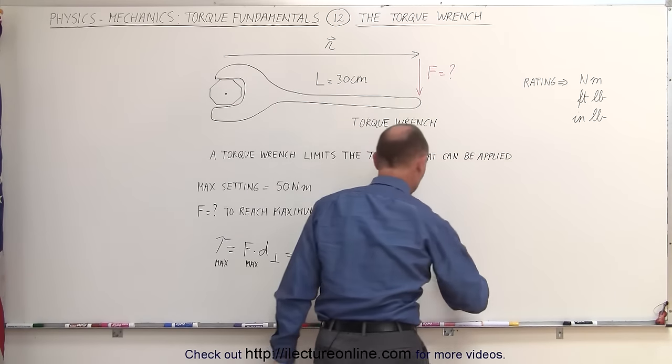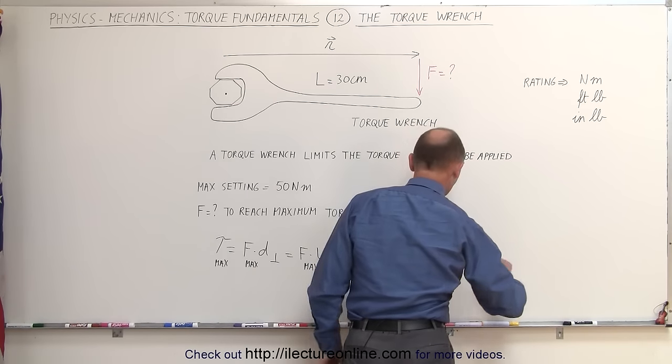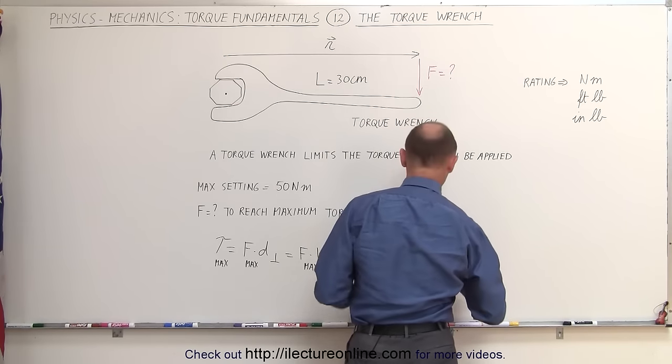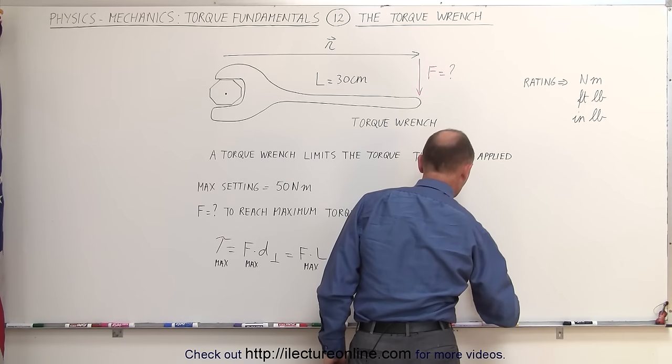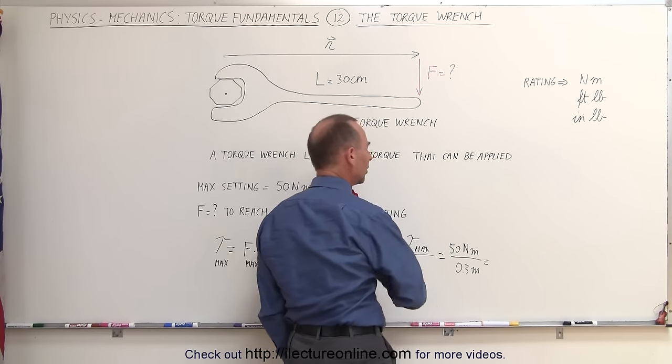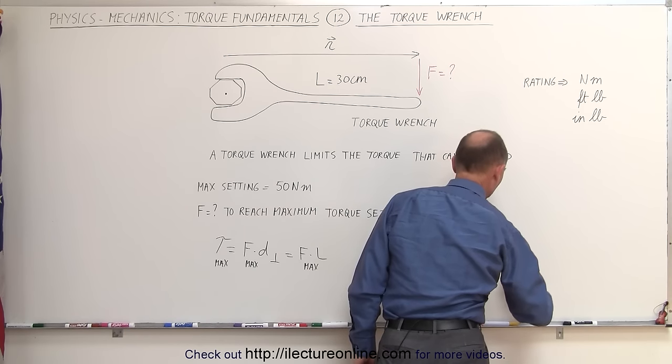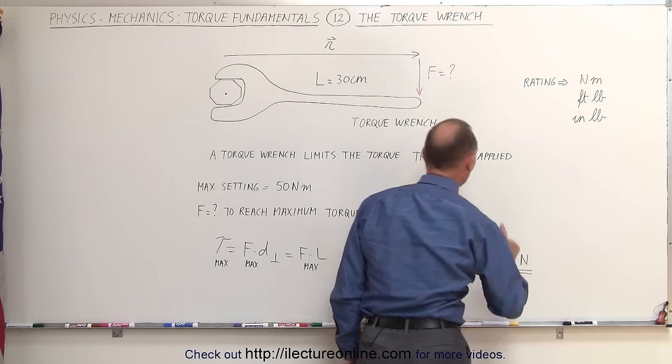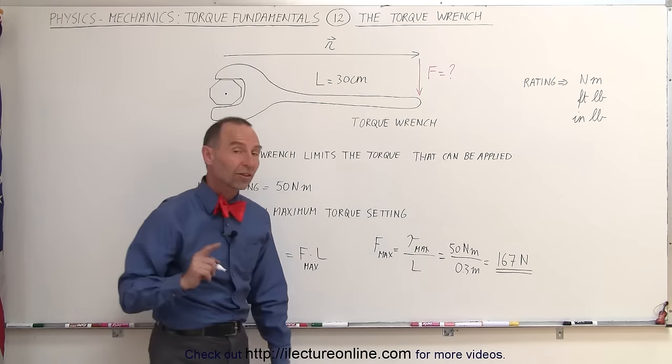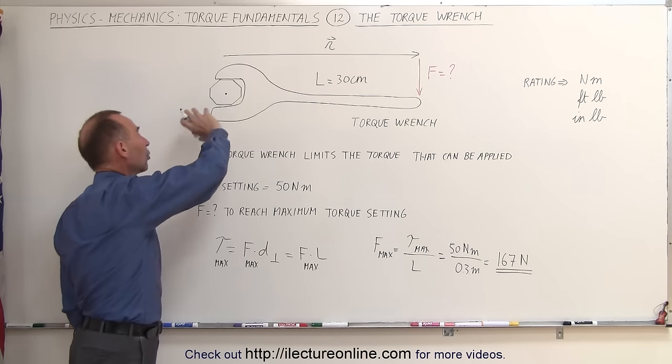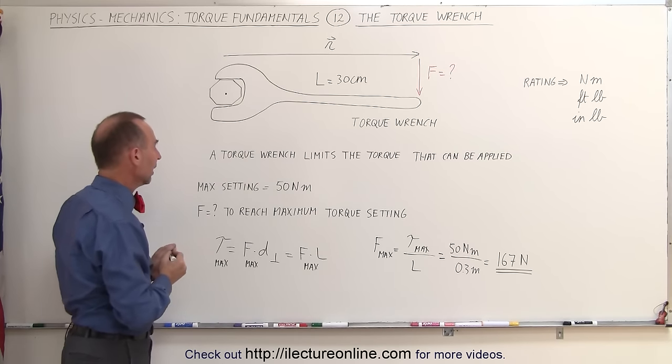So in this case, that would be equal to 50 Nm divided by the length of the torque converted to meters, which is 0.3 meters. That would be 167 Nm. The maximum force applied to the torque wrench needs to be 167 Nm in order to accomplish the maximum torque when we tighten that bolt or that nut.